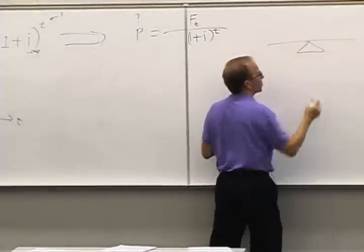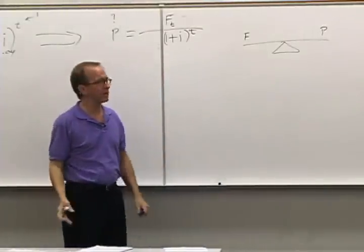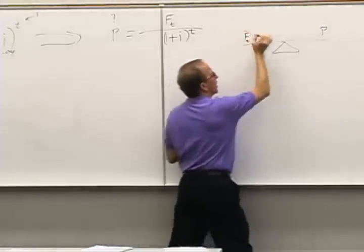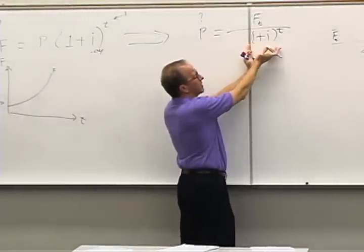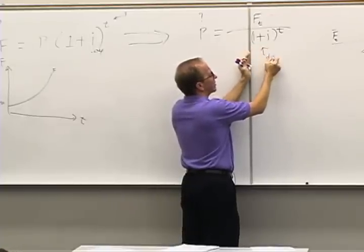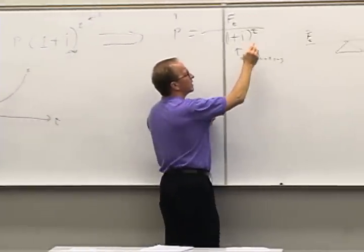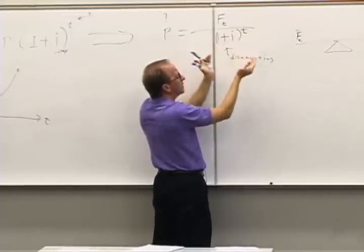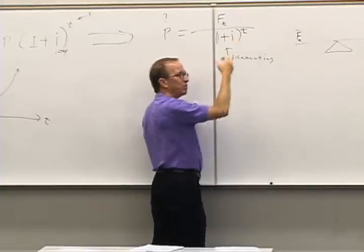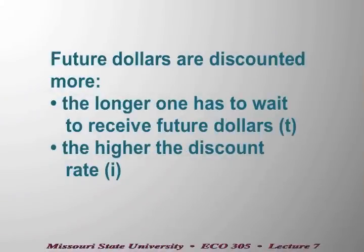What we're trying to calculate is how much those future promises are worth today — what's the present value? I looked at that as scales, where we've got some future dollars and some present dollars trying to weigh them against each other. The formula deflates, divides, discounts those future dollars. The discounting is greater the more years we have to wait. Either i or t could increase, meaning more discounting takes place. The longer we wait and the higher the interest rate — the discount rate — the more we deflate those future promises.